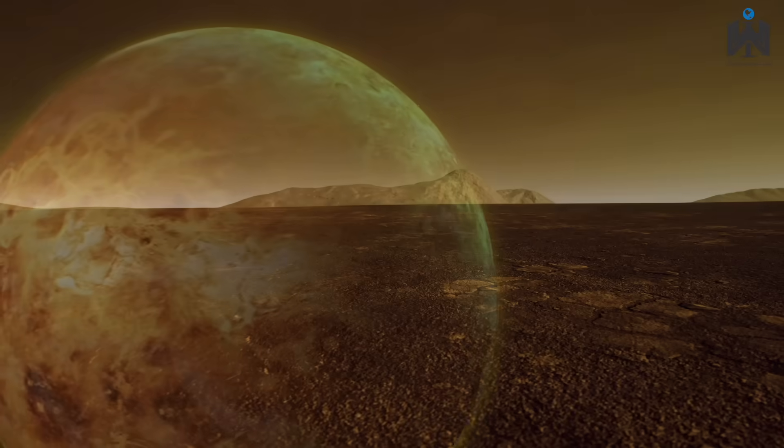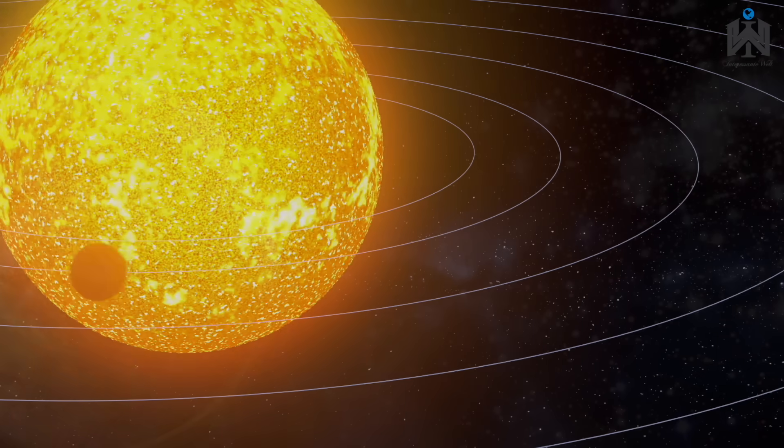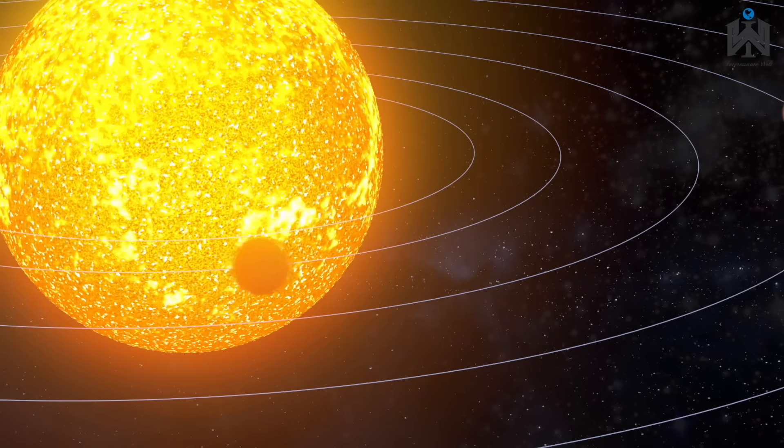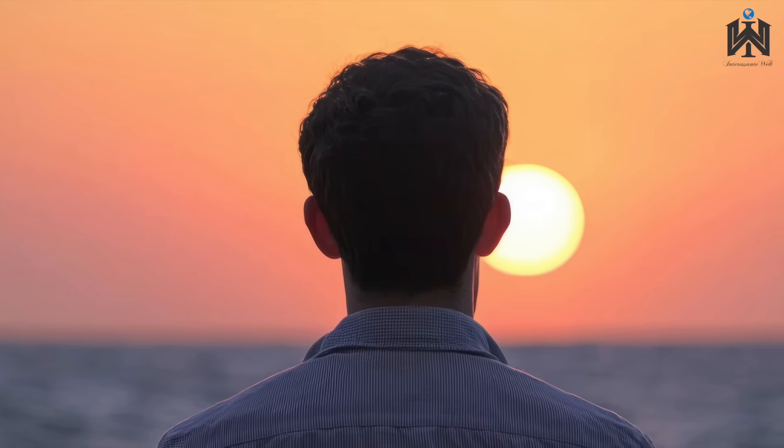Warum ein Sonnentag nicht gleich ein Venustag ist wie bei der Erde, hängt mit der Rotation und dem Kreisen um die Sonne zusammen. Wir sehen also, dass es sehr unterschiedlich sein kann zu dem, was wir auf der Erde kennen.